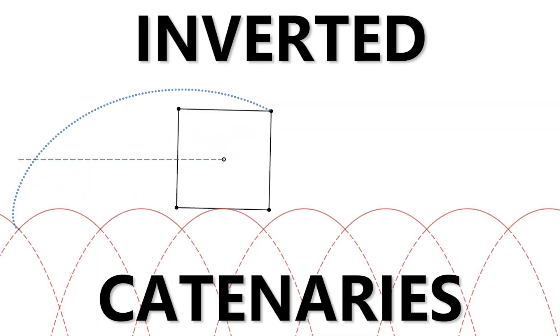A catenary corresponds to the graph function called the hyperbolic cosine. Turning it upside down returns the inverted catenary necessary for a square wheel to roll.